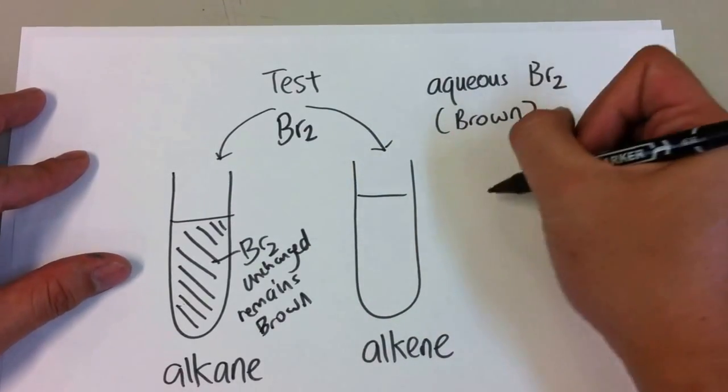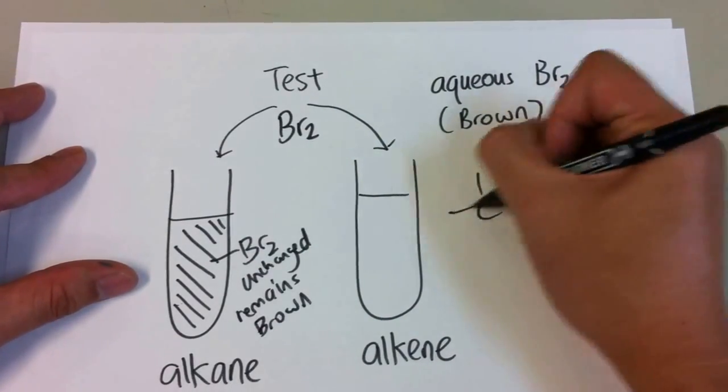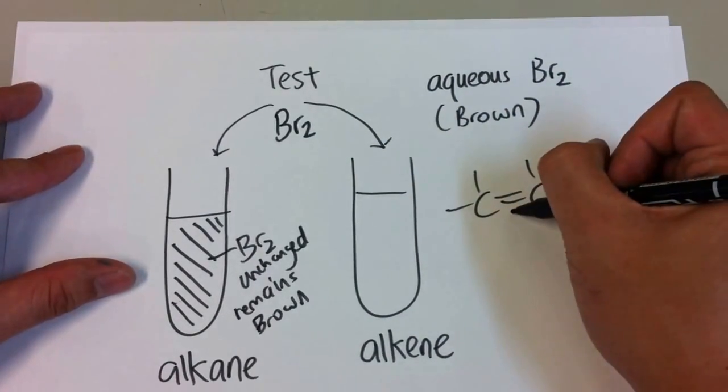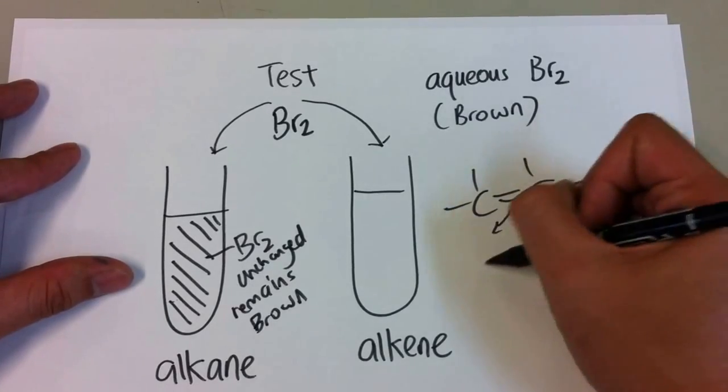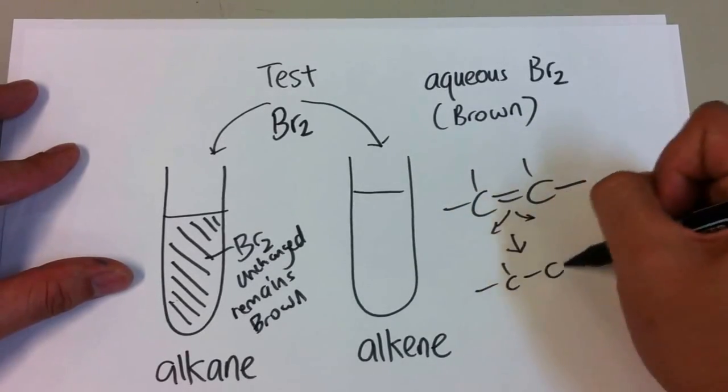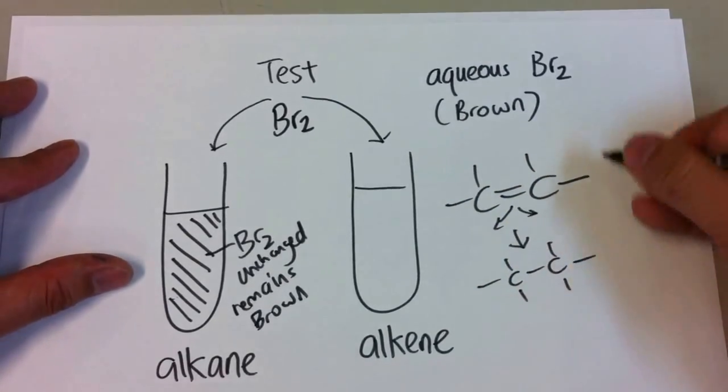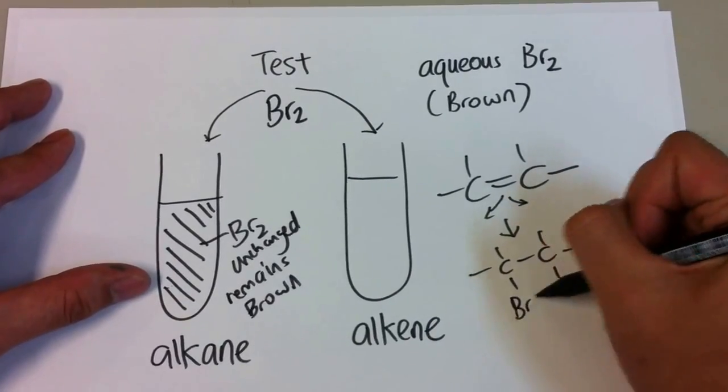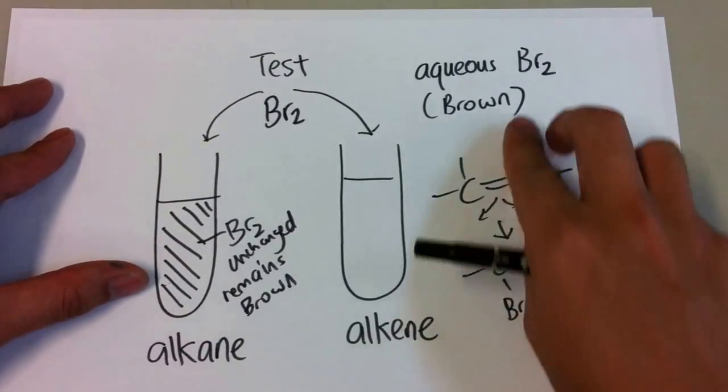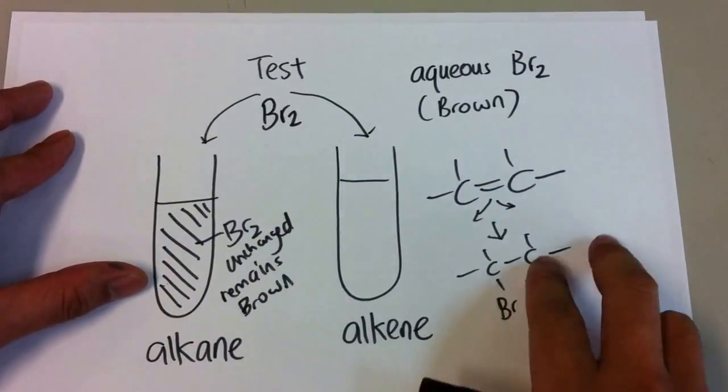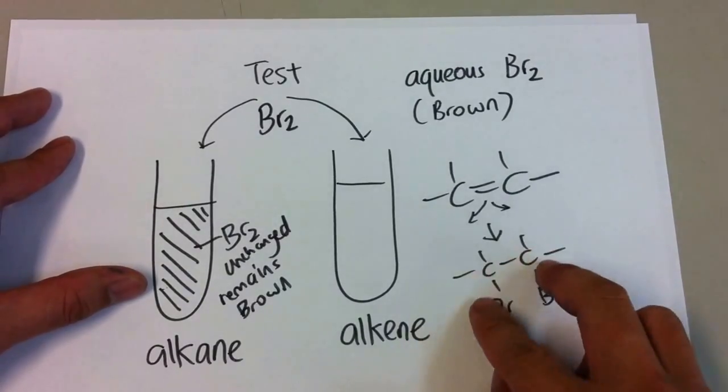But in the case of alkene, because alkene has a double bond, the bond will break and this is what you get. The bromine will be attracted to it, and because bromine is no longer Br2, it has gone and formed a new molecule, a new compound.